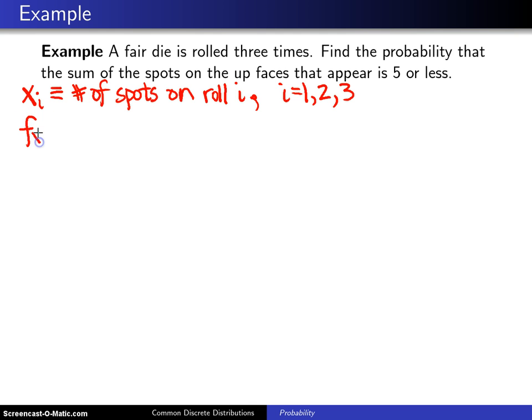The discrete uniform distribution comes in because the probability mass function looks like this. Now there are actually three probability mass functions here, one for i equals one, two, and three.